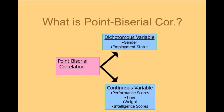The continuous variables, you already know about them. Performance scores, time, weight, intelligence scores, etc. All are continuous variables. These are the variables we normally check their association by using Pearson product moment correlation technique.